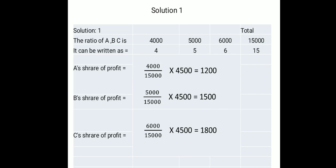A's share of profit equals 4000 divided by 15000, multiplied by 4500. Cancelling the zeros, this gives rupees 1200. That is A's share of the profit.